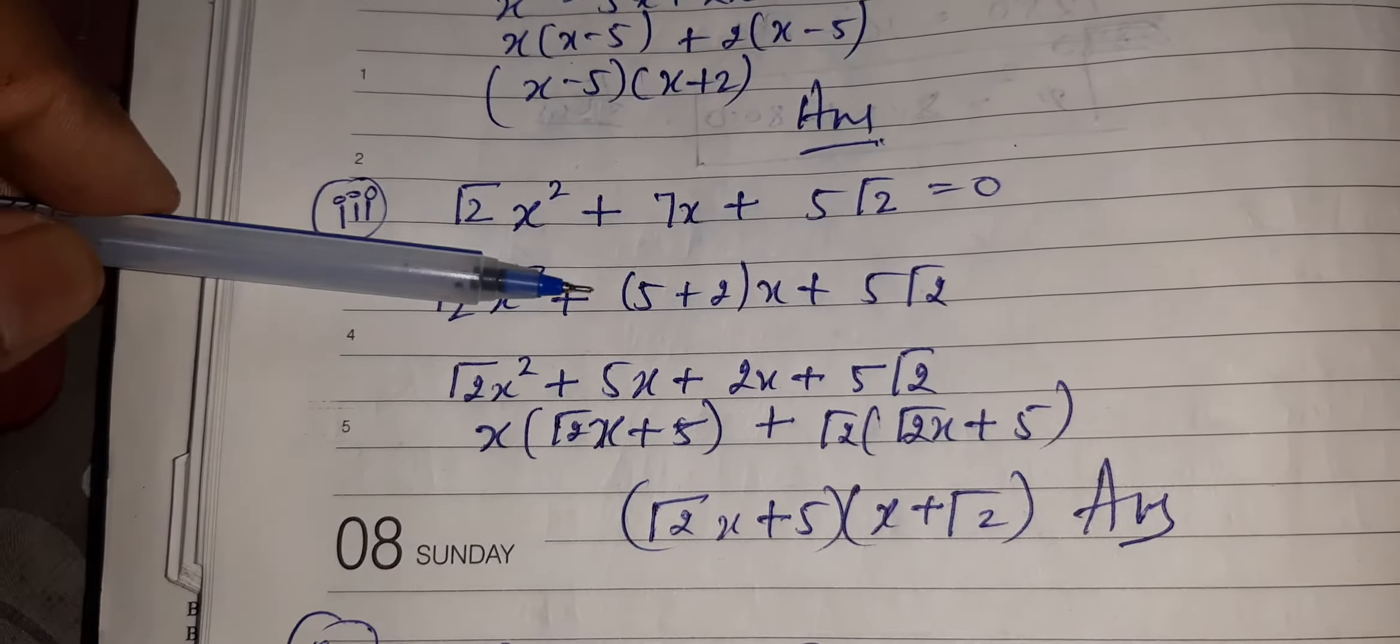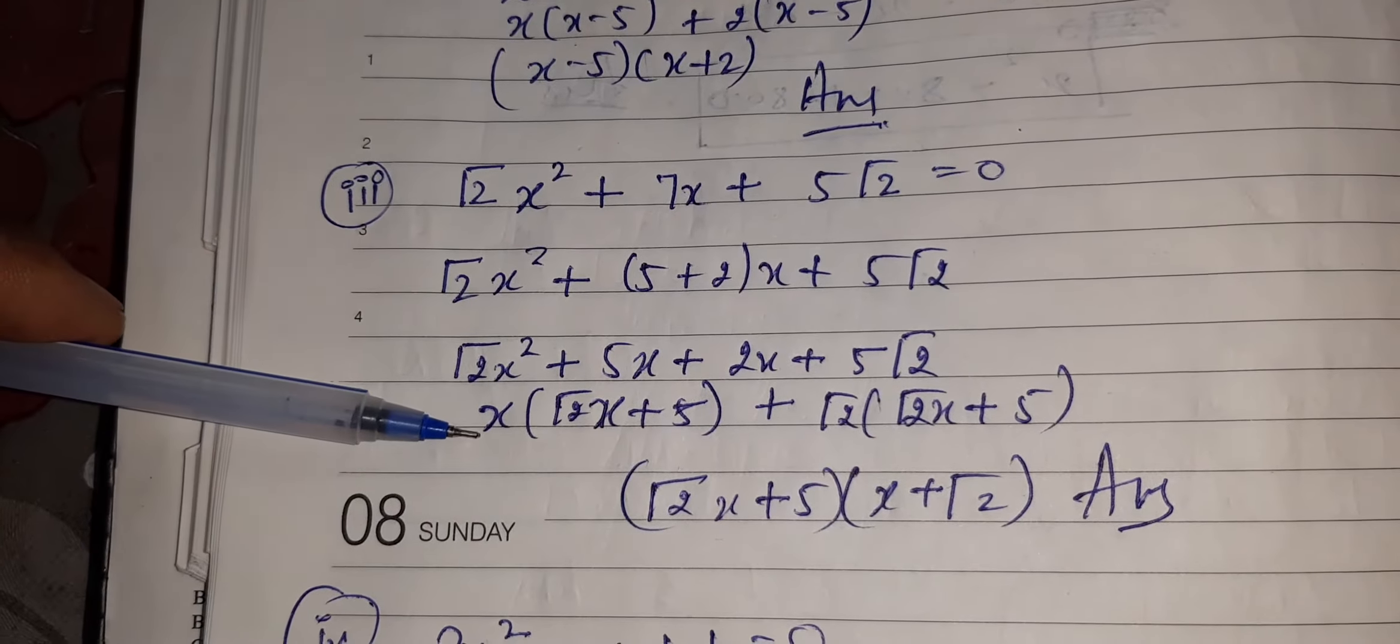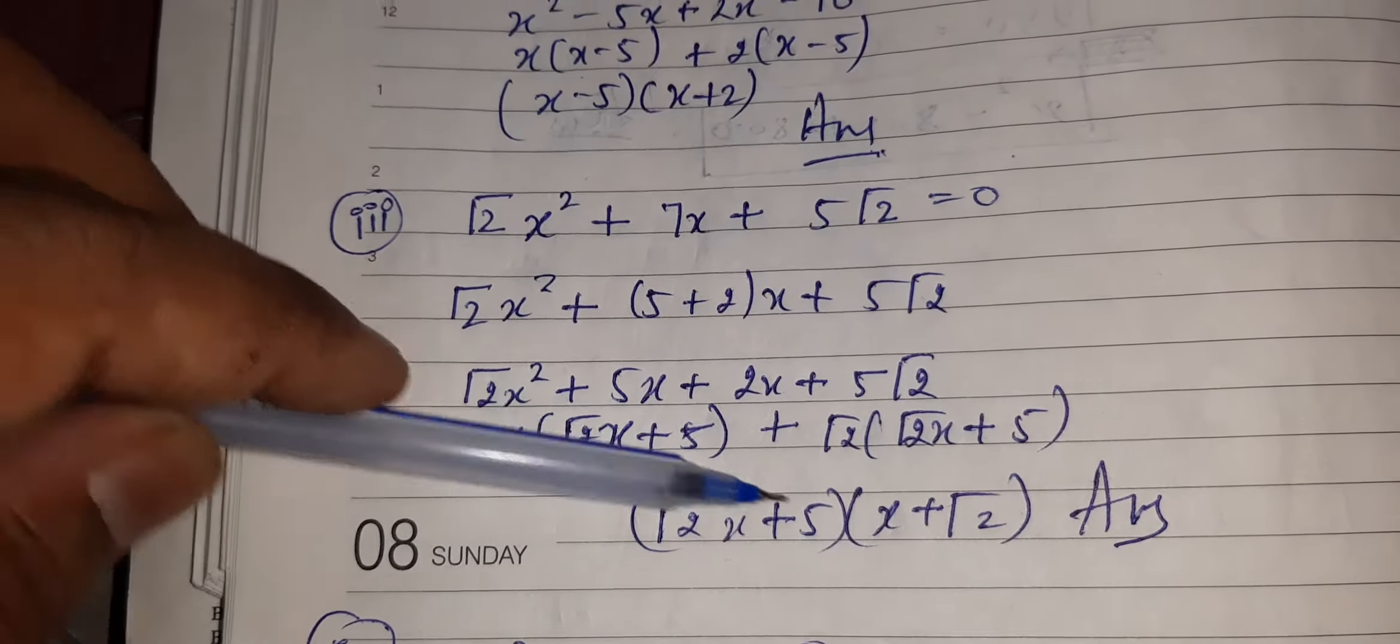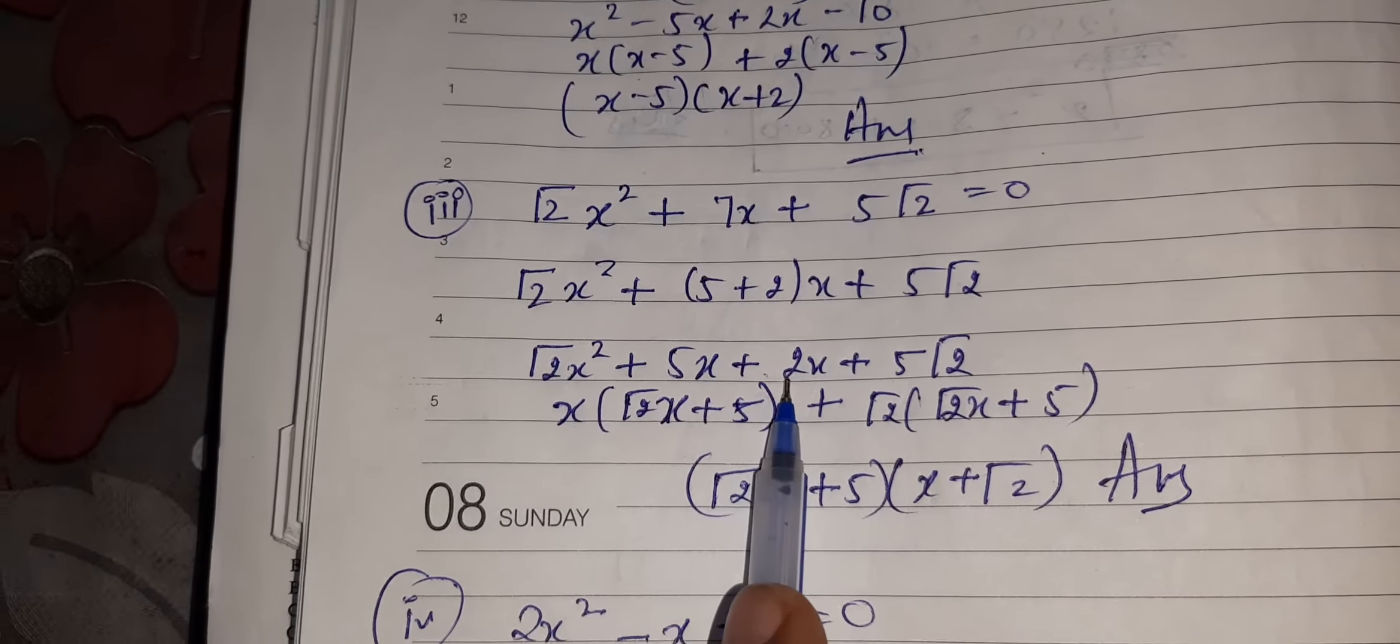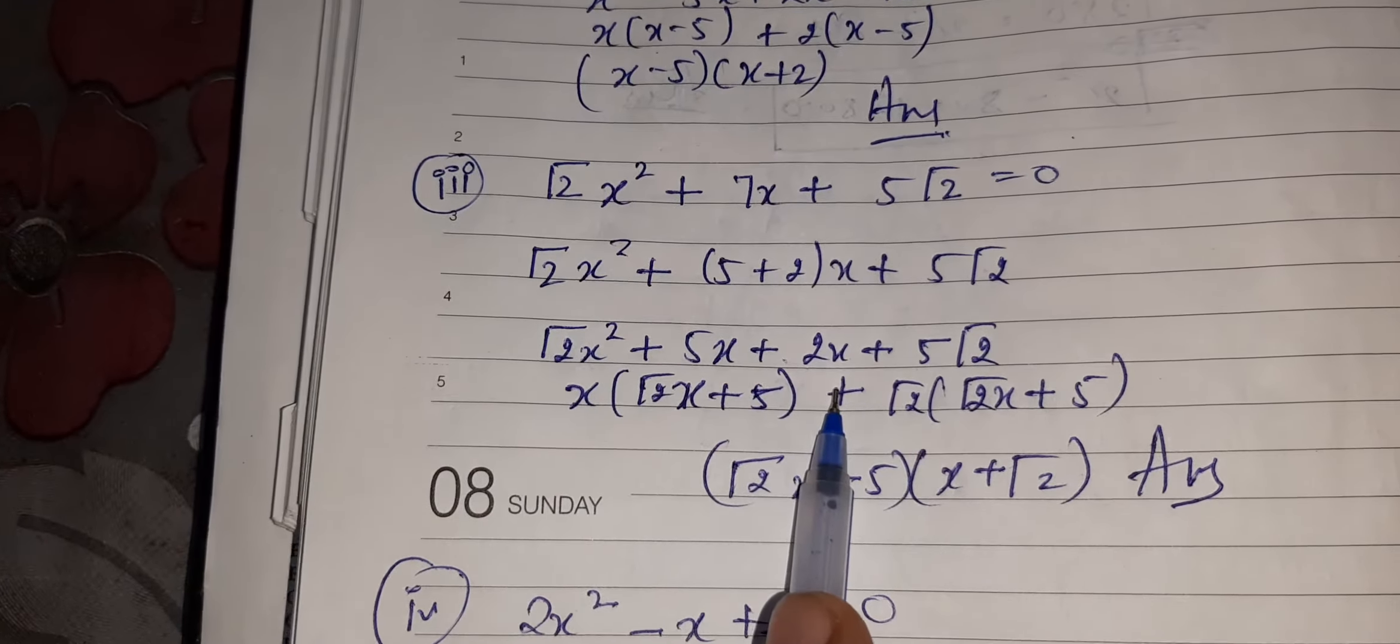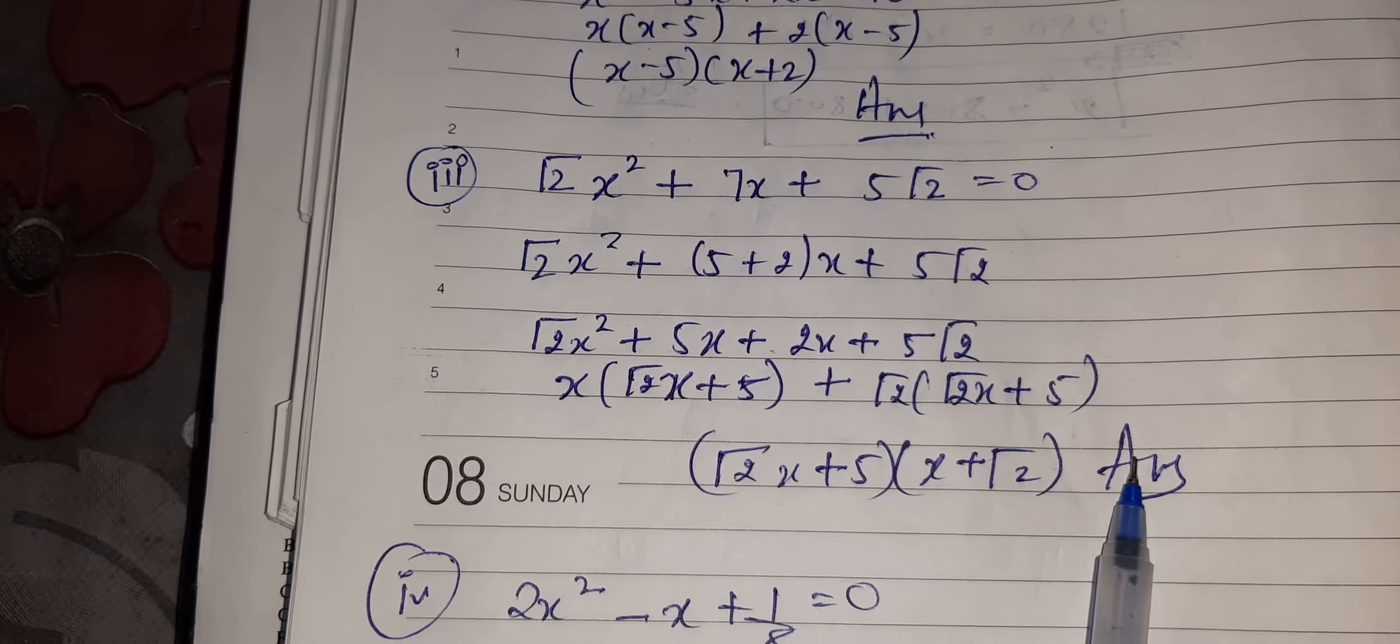x will go inside, plus sign also: √2x² + 5x + 2x + 5√2. Taking common as x, what is left? √2x + 5. I have written this 5√2 as √2 × √2 × 5 so that √2 can be common. √2 will be left here: √2x + 5.